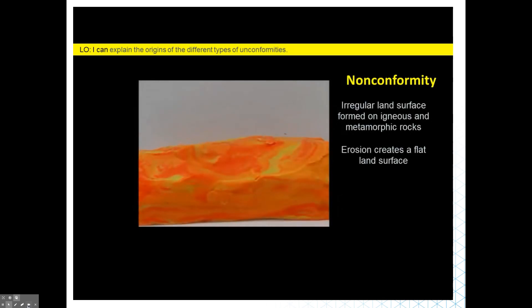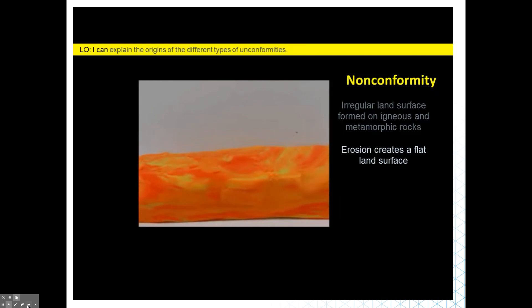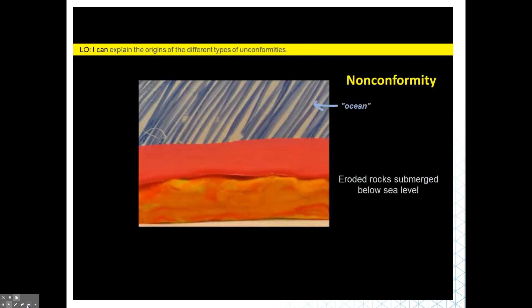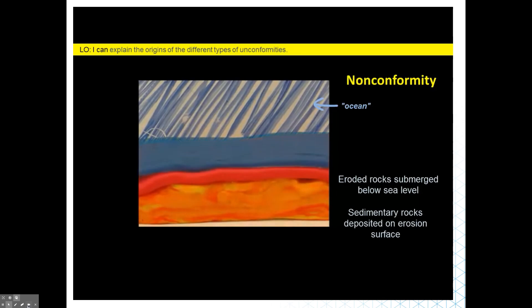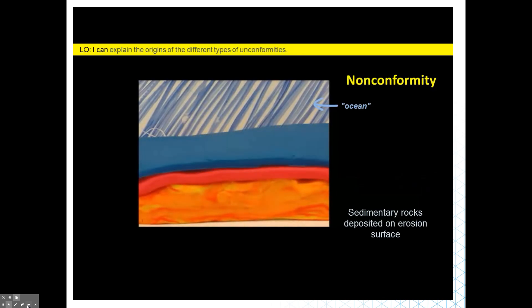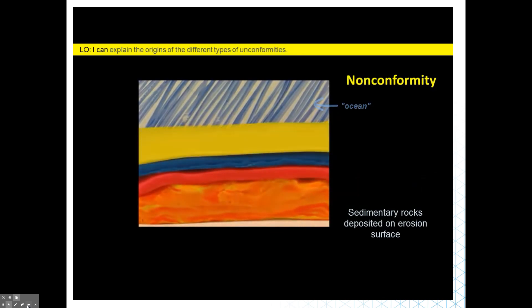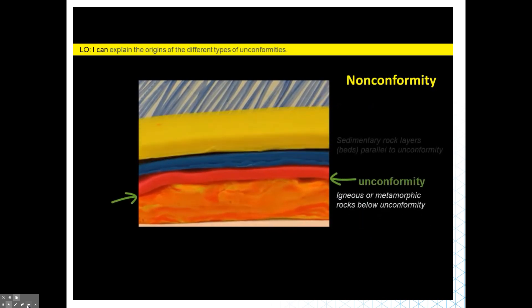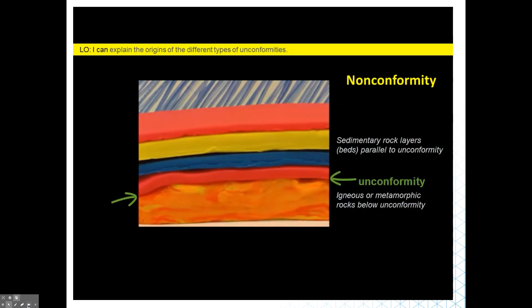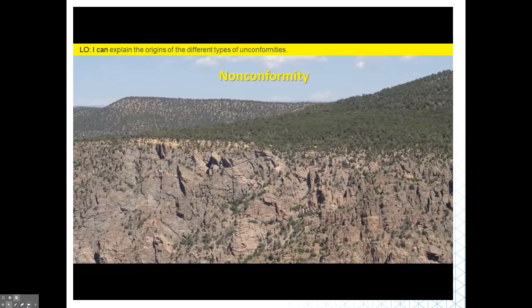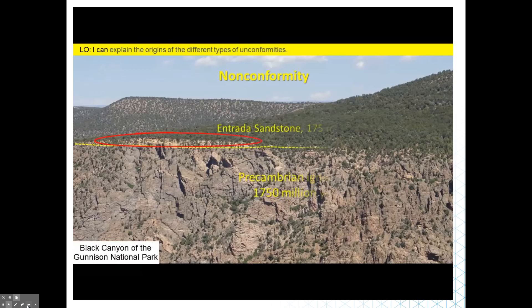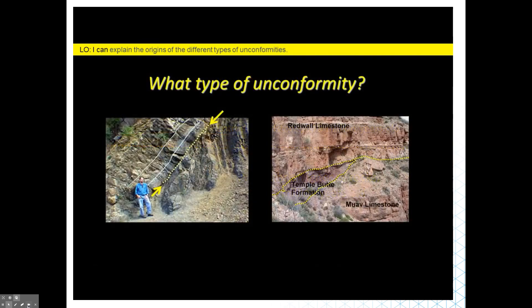Geologists look for evidence of old soil horizons or recognize that fossils above and below the erosion surface lived millions of years apart. In an example from Hungary, different colored layers lie parallel on either side of a disconformity. A non-conformity places sedimentary rock on top of igneous or metamorphic rock — these rocks were uplifted, eroded in mountain ranges, and then resubmerged, with sedimentary rocks deposited above them.